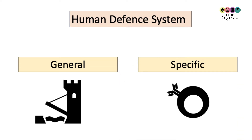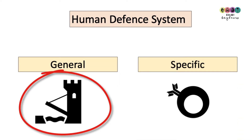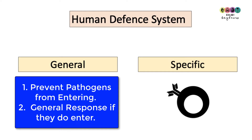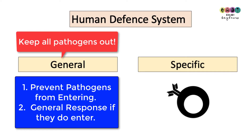The human defense system is made up of the general and the specific defense system. The best way to think of the general defense system is: the body is a castle surrounded by a moat, and pathogens want to gain entry. Your body has certain systems in place to prevent the entry of every pathogen if possible, and if they do manage to breach the walls or gain entry, it's going to deal with them in the same way.